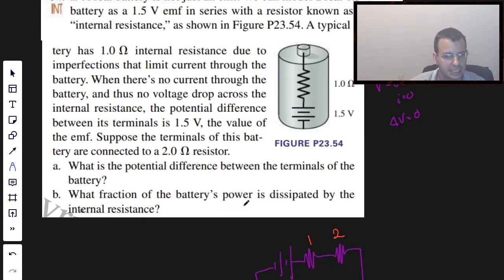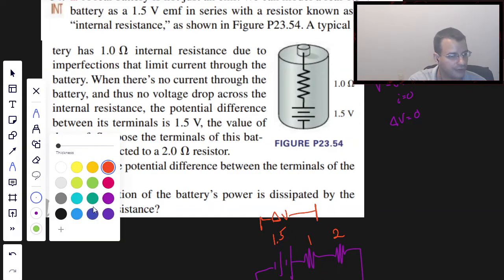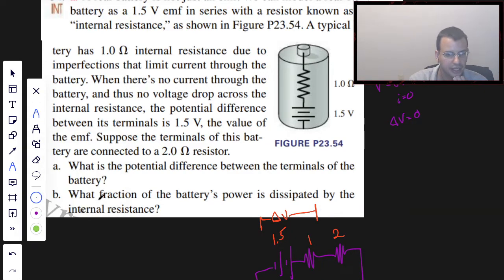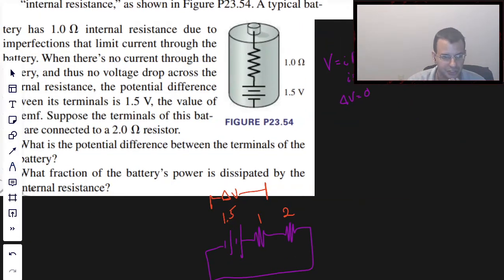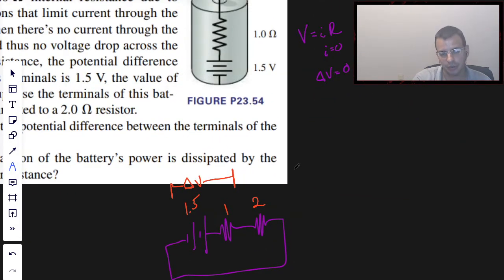And we want to find the potential difference delta V from here to there. So to do that we're going to find the voltage drop across the first resistor. To do that we're going to start by finding the current coming out of the battery.